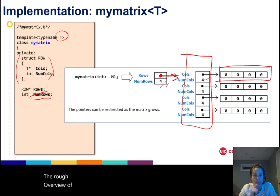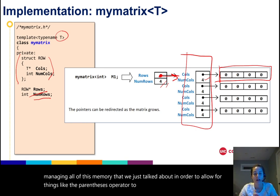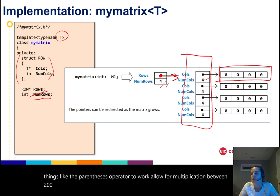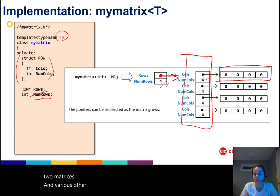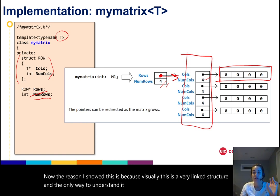So that's the rough overview of the mymatrix class implementation. The implementation is about managing all of this memory that we just talked about in order to allow for things like the parentheses operator to work, allow for multiplication between two matrices and various other matrix operations to work. Now the reason I showed this is because visually this is a very linked structure and the only way to understand it is to diagram it.